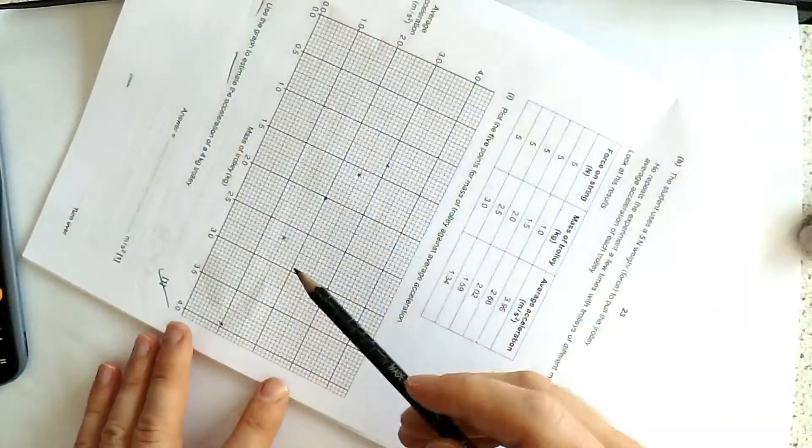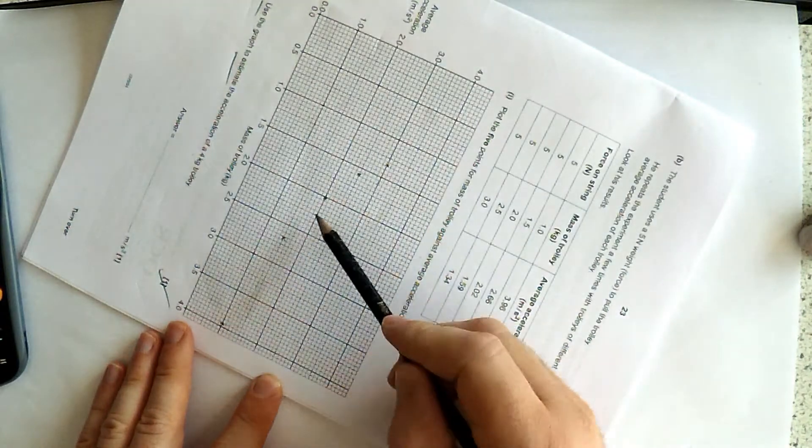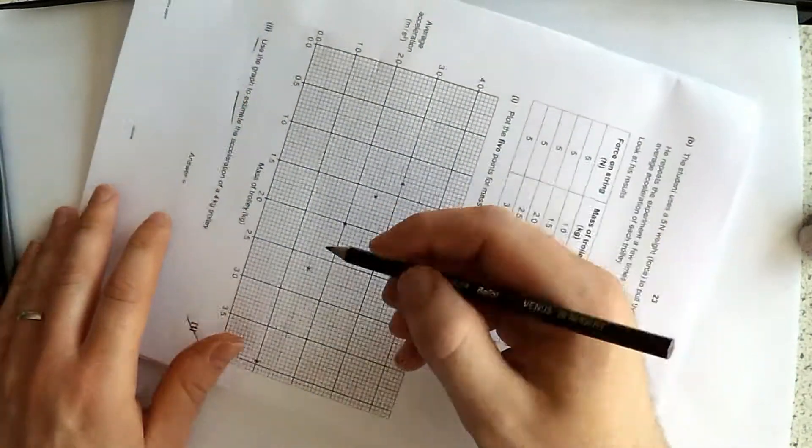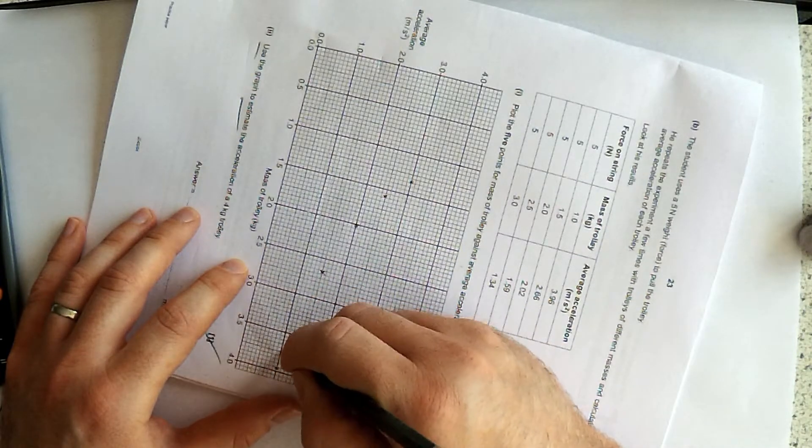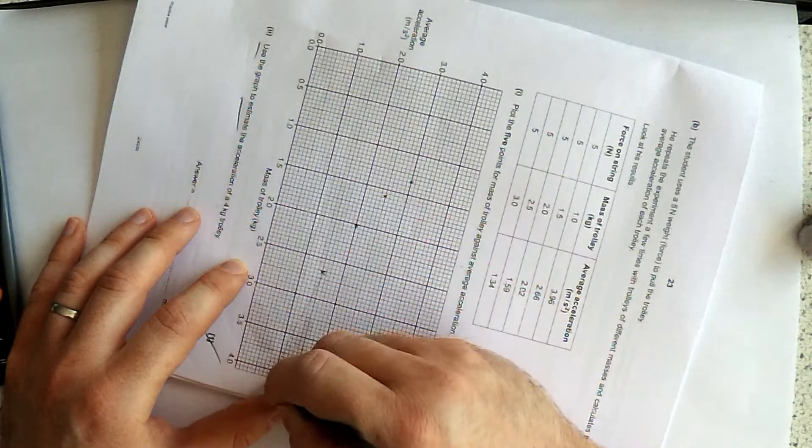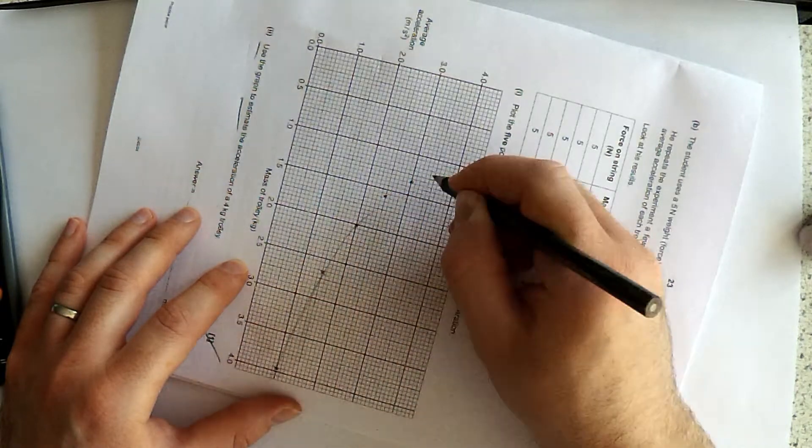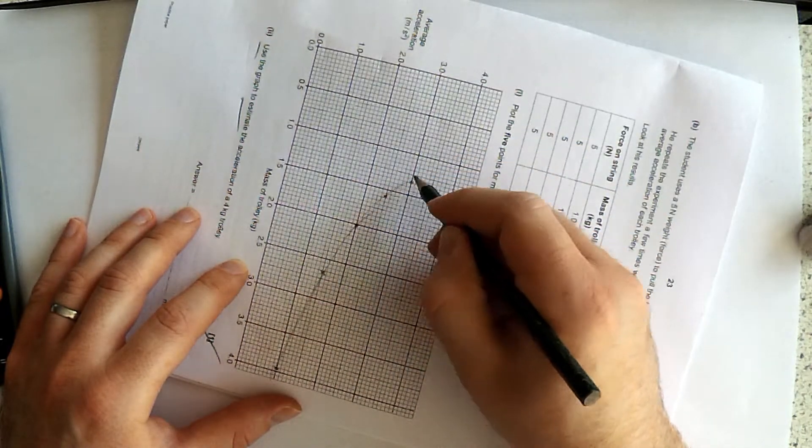So it has to be a curve. And when I try and fit a curve, I would normally turn the page around and just do a couple of practice swings and then have a go. Now it's important not to make it a sketchy curve.